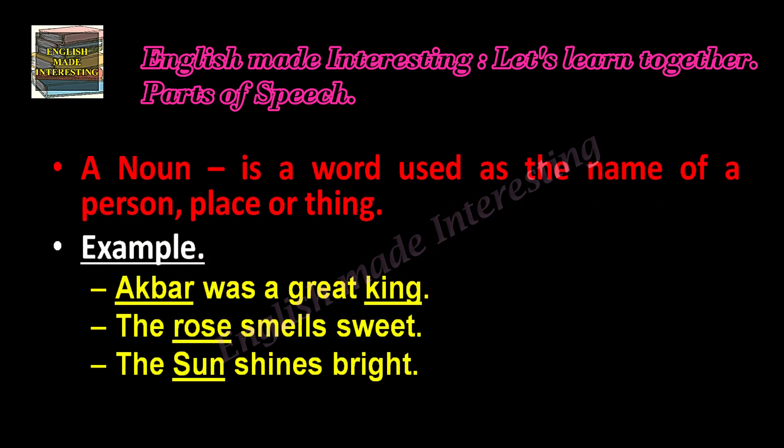Now let's see what a noun is. A noun is a word used as the name of a person, place, or a thing. Examples: 'Agra was a great king.' 'The rose smells sweet.' 'The sun shines bright.' Here, Agra and sun are proper nouns.